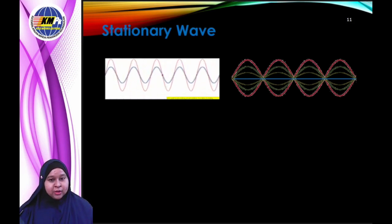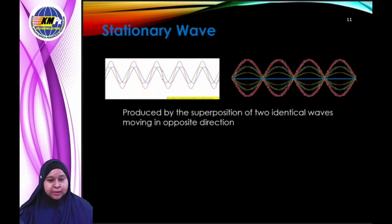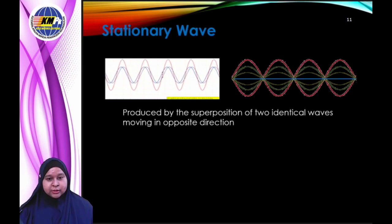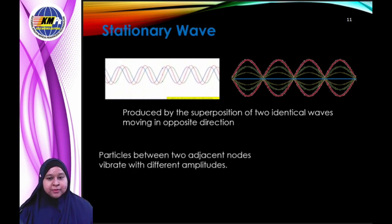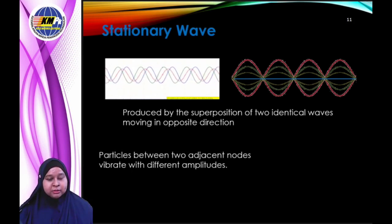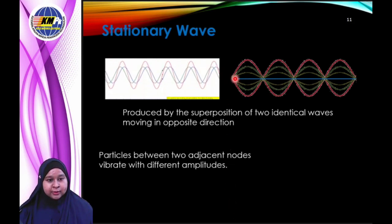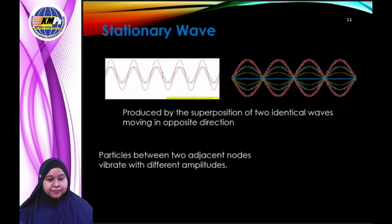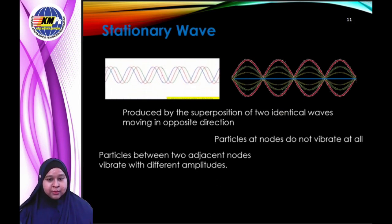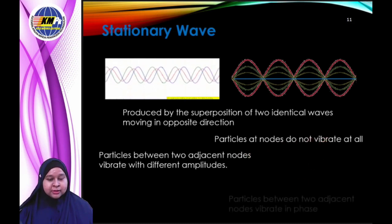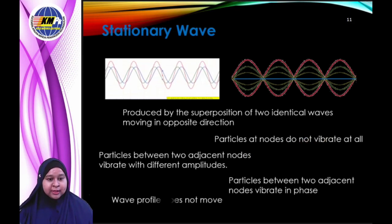Stationary wave. Look at this animation and picture. A standing wave, also called a stationary wave, is formed by the combination of two waves moving with the same speed in opposite directions, having the same amplitude and frequency. In a stationary wave, the amplitudes of different particles vary — from zero at the nodes to maximum at the antinodes. Particles at the nodes are permanently at rest, and a stationary wave does not transport energy from one place to another.